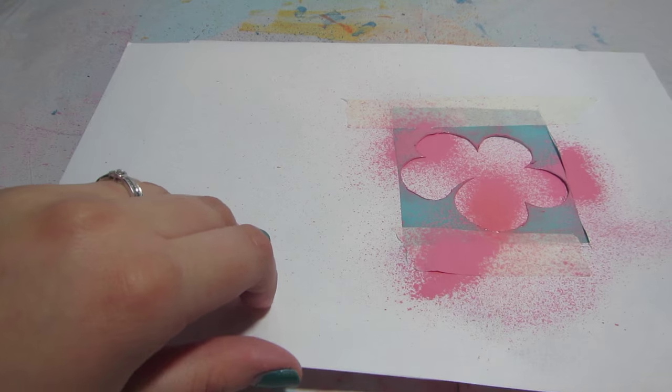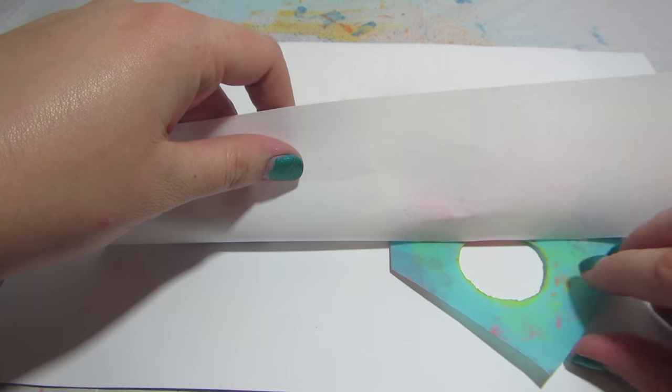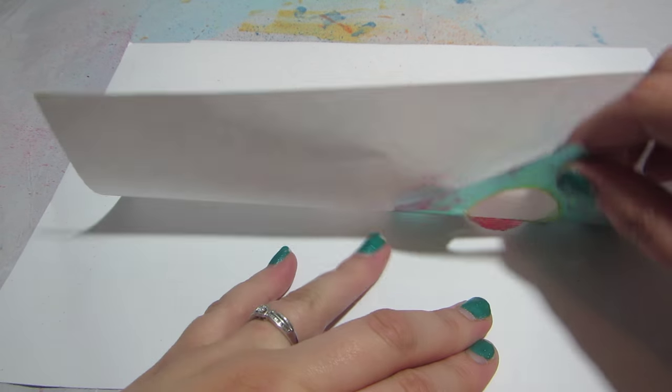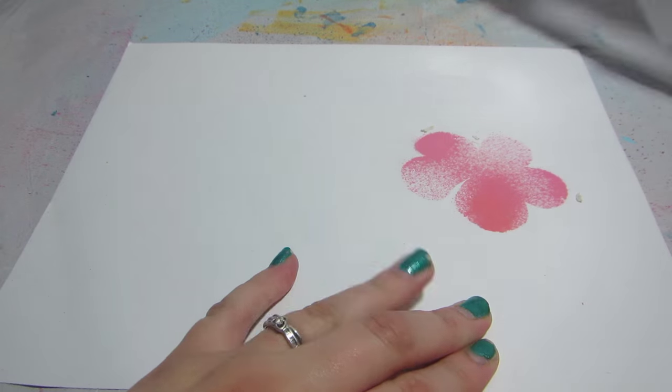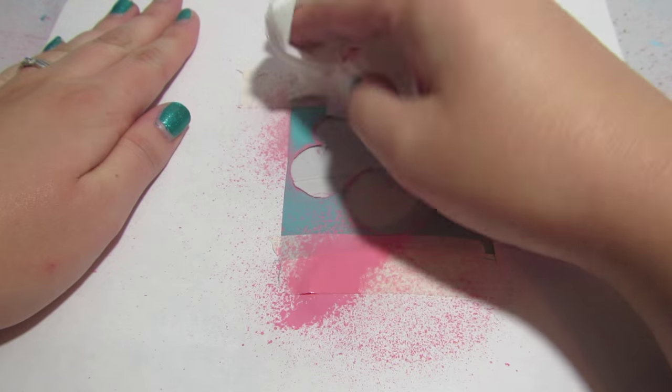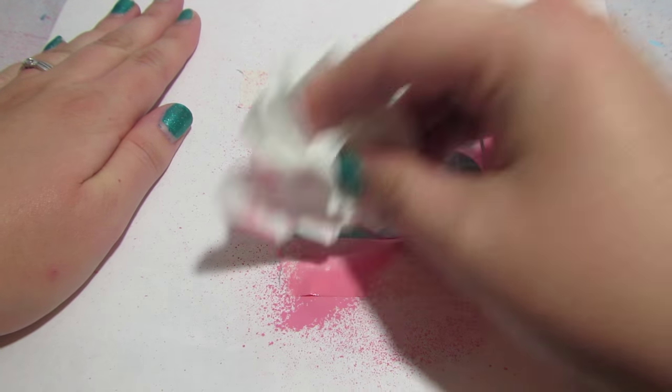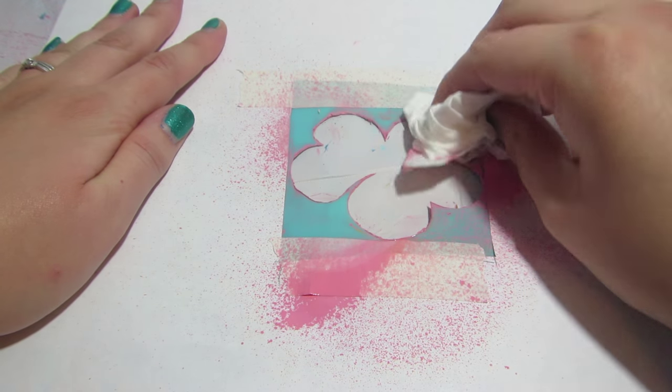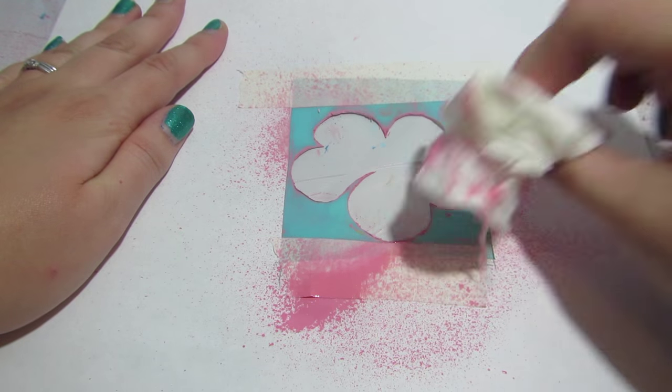Gently remove your stencil from your canvas, keeping all of the tape and paper connected to it. This makes it easier to wipe excess paint off of your stencil without making more of a mess. I like to wipe my stencils because I use them more than once per project. You may find it unnecessary to wipe the excess paint off of your stencil.